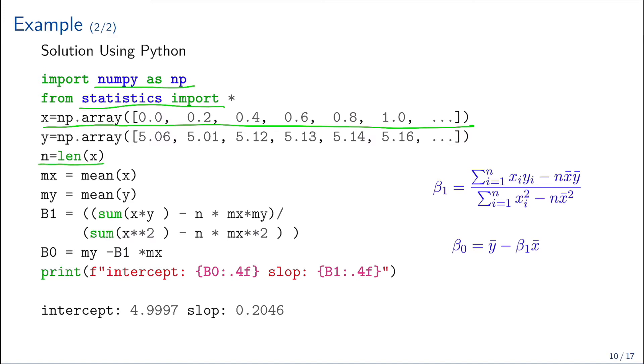Our data is loaded into Python as numpy arrays, and n is the total length of the array. Then we compute the mean of x and the mean of y, storing them in two variables, mx and my.